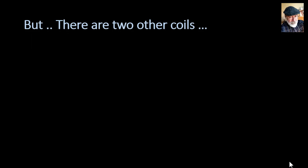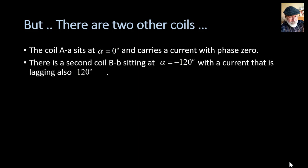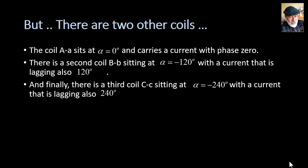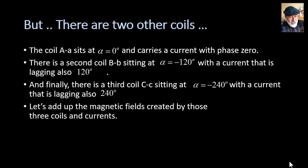The first coil A sits at alpha zero degrees and carries a current with zero degrees of phase. The second coil will sit at negative 120 degrees on the stator. That is coil B. And has a current that is also lagging 120 degrees. Coil C is sitting at alpha negative 240 degrees with a current that is lagging 240 degrees.